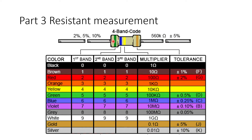To repeat: the first two bands give you the first two digits, and the third band tells you how many zeros follow behind it. In this case, 5, 6 followed by 4 zeros equals 560 kilo-ohms. You can directly read it — rinse and repeat this same process on all the colors written on the resistor. Alright, that will be all. Please enjoy the lab. Thank you.